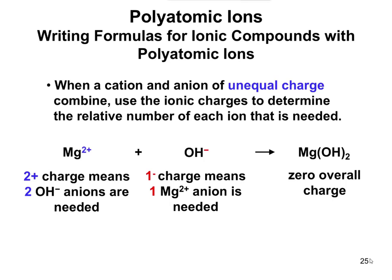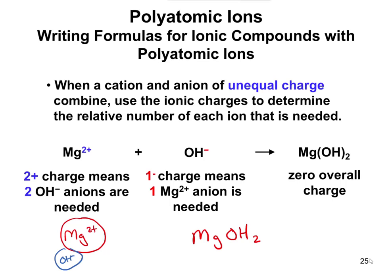The parentheses are necessary. If we just wrote MgOH2, that would mean one magnesium, one oxygen, and two hydrogens. But what we really have is Mg 2+ with two separate OH minus ions — two oxygens and two hydrogens. When you have two separate OH minuses, you must write it with parentheses. So whenever you need more than one of a polyatomic ion, put it in parentheses and use the subscript to indicate how many there are.